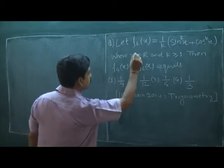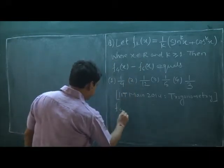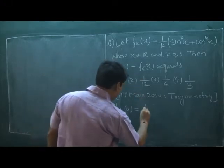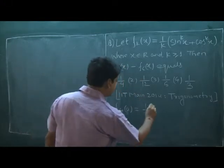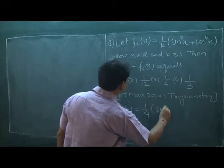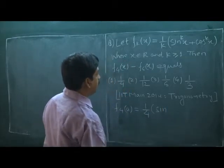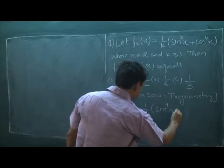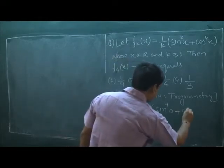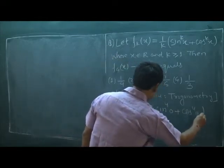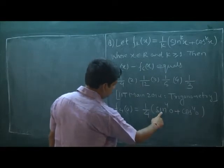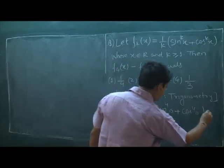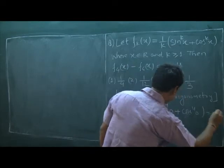f4(0) is 1 by 4 times sin to the power 4 of 0 plus cos to the power 4 of 0. Since sin 0 is 0 and cos 0 is 1, this is 1 by 4.